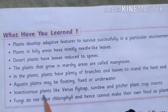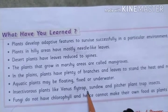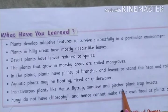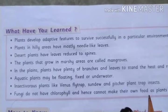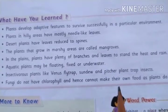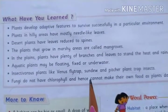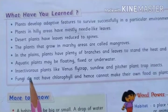Insectivorous plants like Venus flytrap, sundew, and pitcher plants trap insects. They are carnivorous plants because they feed on insects.